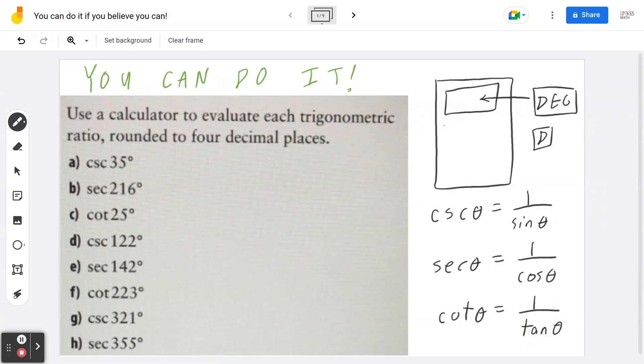To my knowledge, most scientific calculators will only have the sine, cosine, and tan theta key, but you will not find the cosecant, secant, or cotangent. So that's what we're going to use in order to evaluate this.